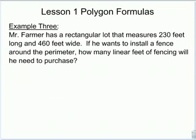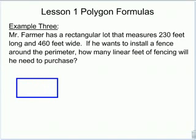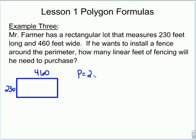Example 3. Mr. Farmer has a rectangular lot that measures 230 feet long and 460 feet wide. If he wants to install a fence around the perimeter, how many linear feet of fencing will he need to purchase? I'm going to draw his rectangular lot and label the parts — one side is 230, the other side is 460. He wants us to figure out the perimeter — how much fencing he needs to buy to go all the way around.